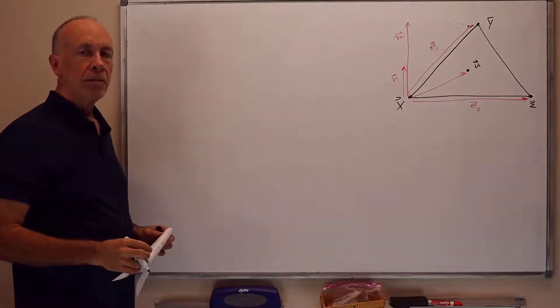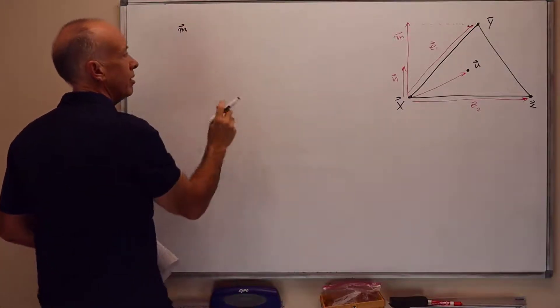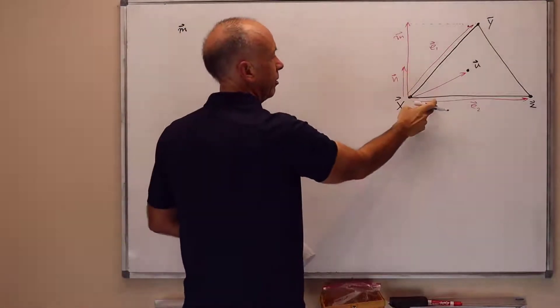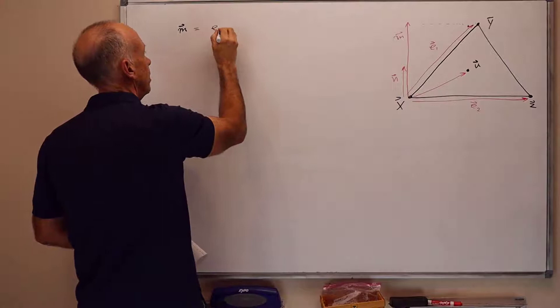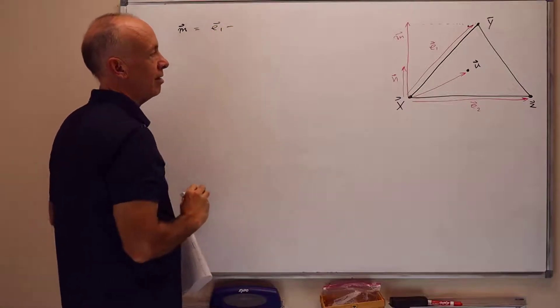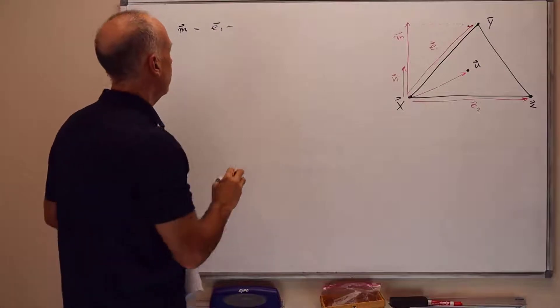So we'll start by working out the formula for m. So remember m is the component of e1 orthogonal to e2. So we'll get this by taking e1 minus the component of e1 parallel to e2. So we know how to do that.